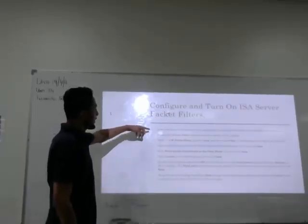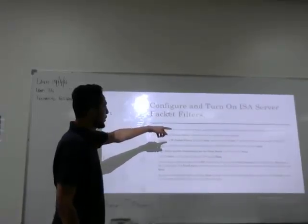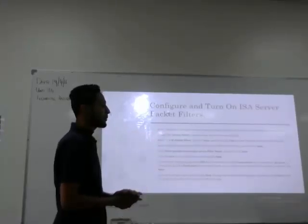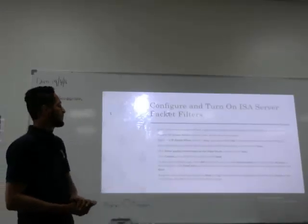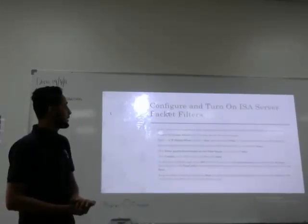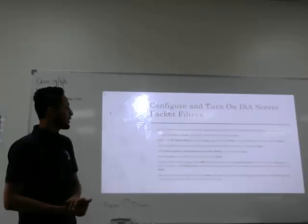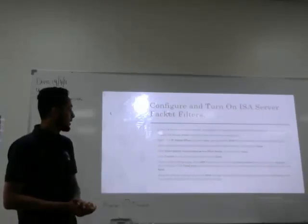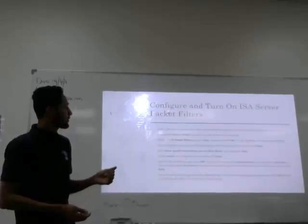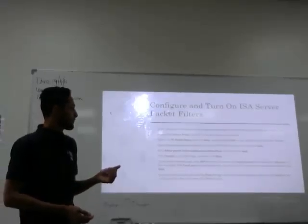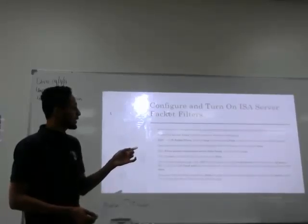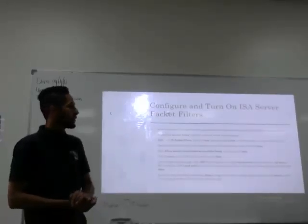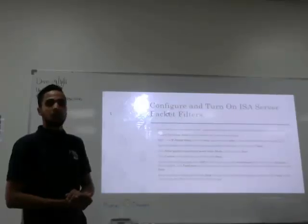In the ISA Server management tool, expand the management nodes beneath your server name. Expand the access policy branch to view the list of access policies. Right-click IP packet filters, point to New, and then click Filters to start the New IP Packet Filter wizard.